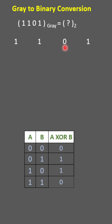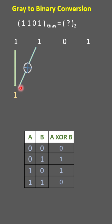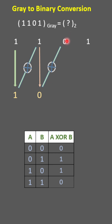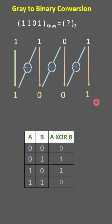The given gray code is 1101. The first step is to write down the leftmost bit of gray code as it is. So I have copied 1 as it is. In the next step, this copied 1 is XORed with the next bit 1 — so 1 XOR 1 equals 0. Now this result 0 is again XORed with the next bit 0, which equals 0. Then this 0 is XORed with 1, which gives 1 as a result. So 1001 is the equivalent binary number.